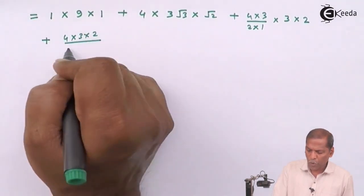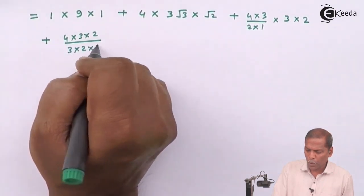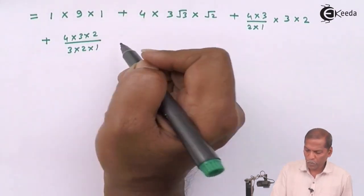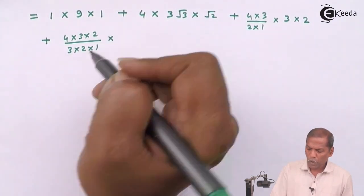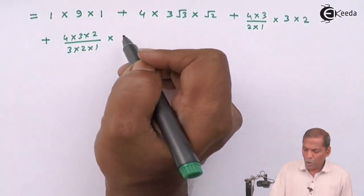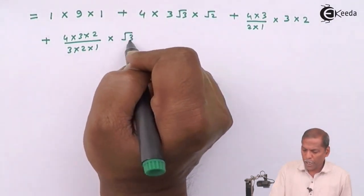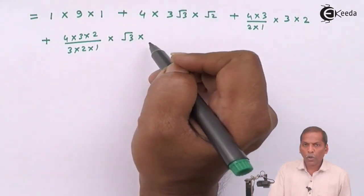Plus now for 4C3 we write 4 into 3 into 2 upon 3 into 2 into 1.